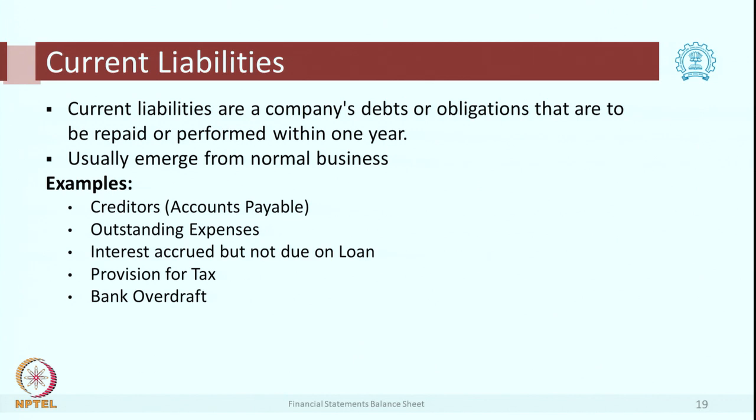One example of current liability is creditors, also known as accounts payable. Then there are outstanding expenses. For example, if you have 100 employees, normally salary should be paid on the last day of the month — say 30th or 31st. If we do not pay salary on that day — say salary of April should be paid by 30th April, but we pay it on 10th of May — then from 30th April up to 9th of May, each balance sheet will show it as an outstanding expense or outstanding liability. Any expense which is unpaid will be considered as an outstanding expense.